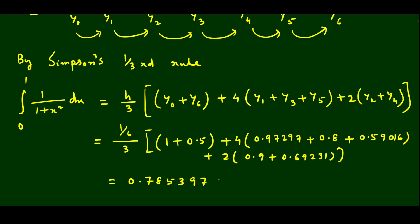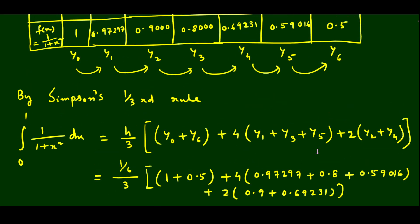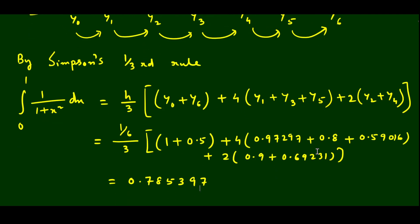If you take 4 sub-intervals your answer will be slightly different but still correct. If you want more accuracy, take 8 sub-intervals. Taking n = 6 is standard because in our next lecture we will learn Simpson's three-eighths rule, which requires n to be a multiple of 3. Since 6 is a multiple of both 2 and 3, both Simpson's one-third and three-eighths rules can be applied. I think Simpson's one-third is clear to all of you — practice more problems. Thank you for watching, and if you understood, share with your friends.